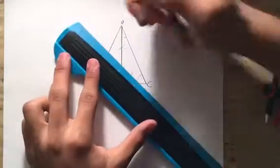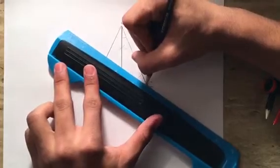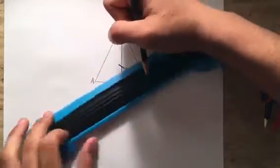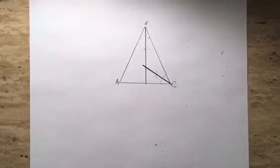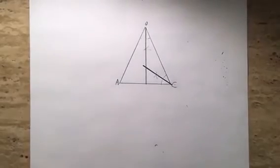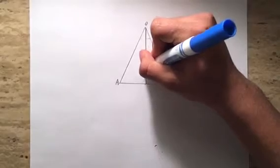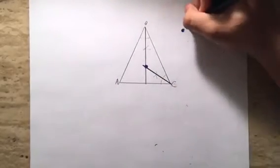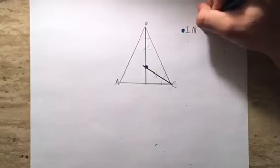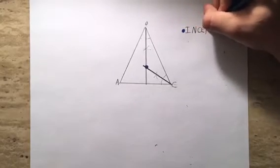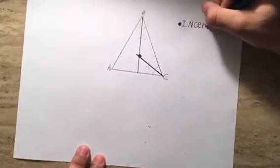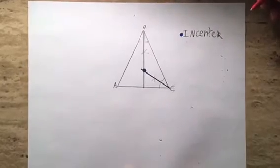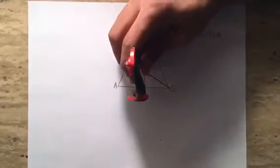Once you do that, take your ruler and put a line down the middle where they intersect. For step three, what you guys want to do is label the point of intersection, which is the incenter — where the two angle bisectors intersect. As you guys can see, go ahead and label that point.